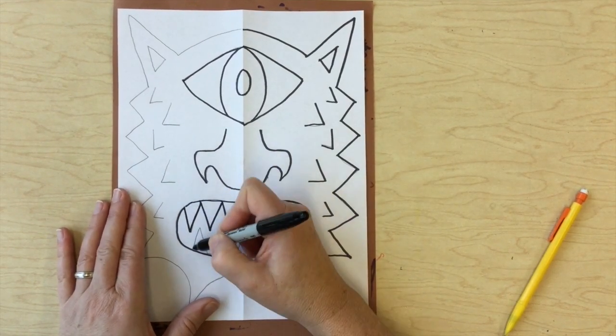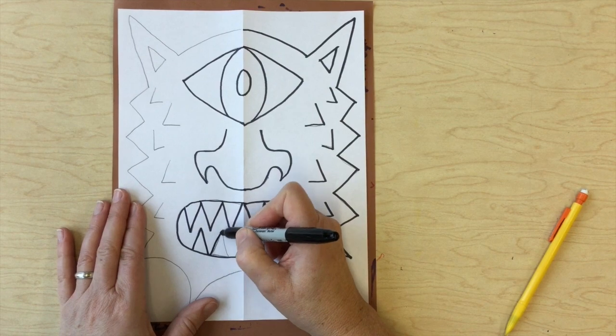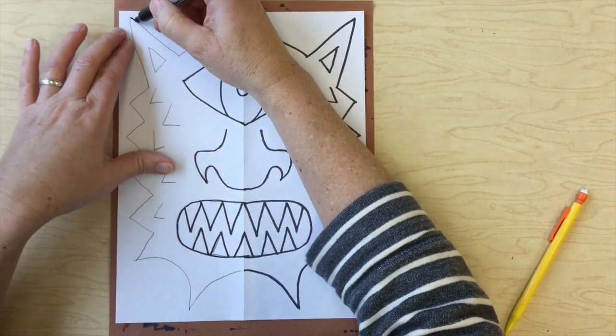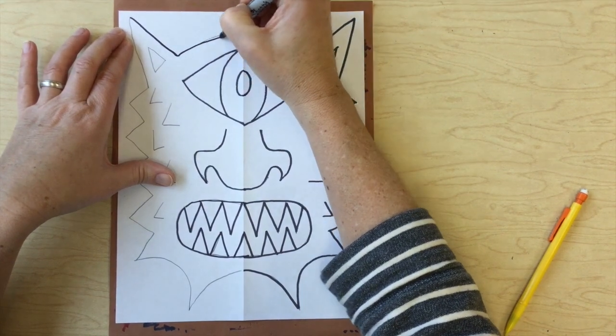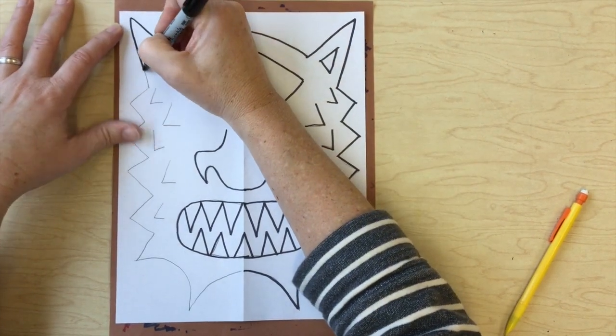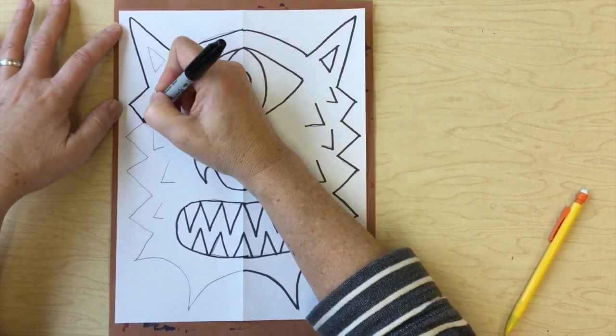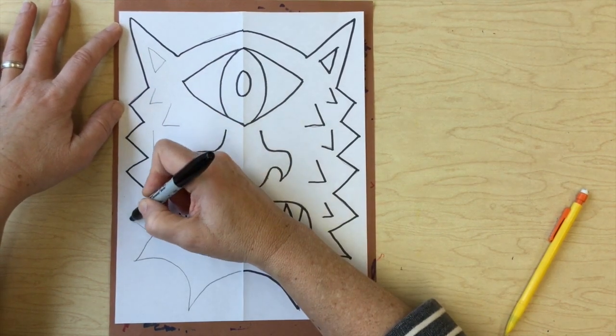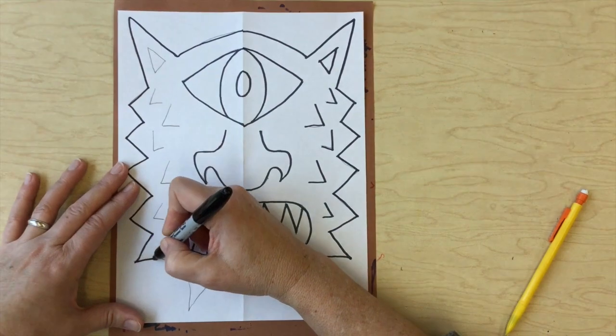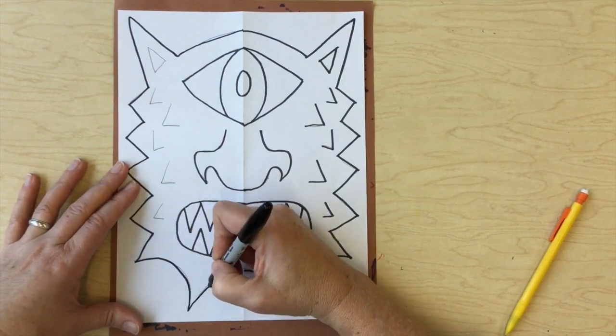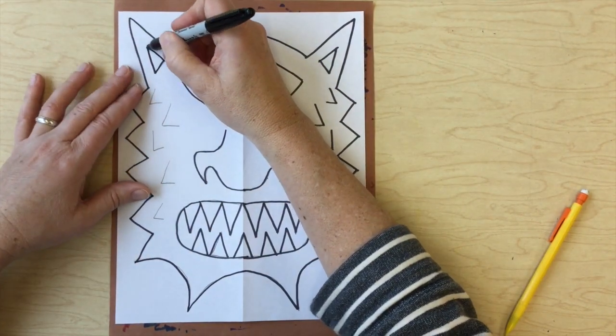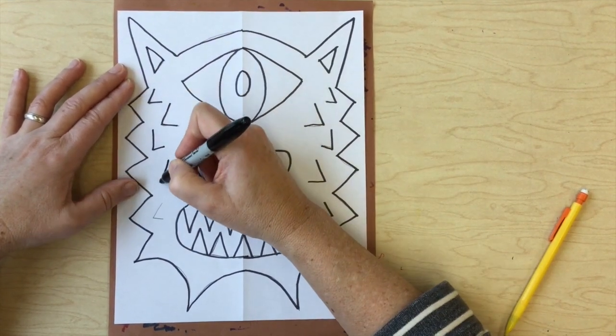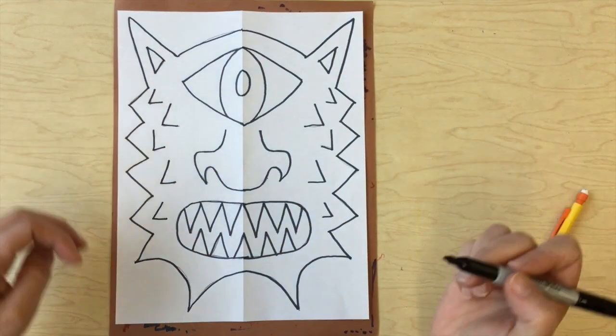When you're done sharpening, you might decide to use your eraser to erase your extra pencil marks before you color. When you color this, you could use crayons, markers, or colored pencils. My favorite material to color these with is crayons.